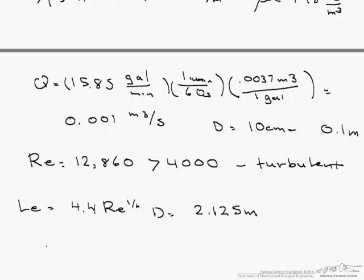So that means that in our pipe, which is 8 meters long, as soon as we get to 2.125 meters, the flow here is now fully developed.